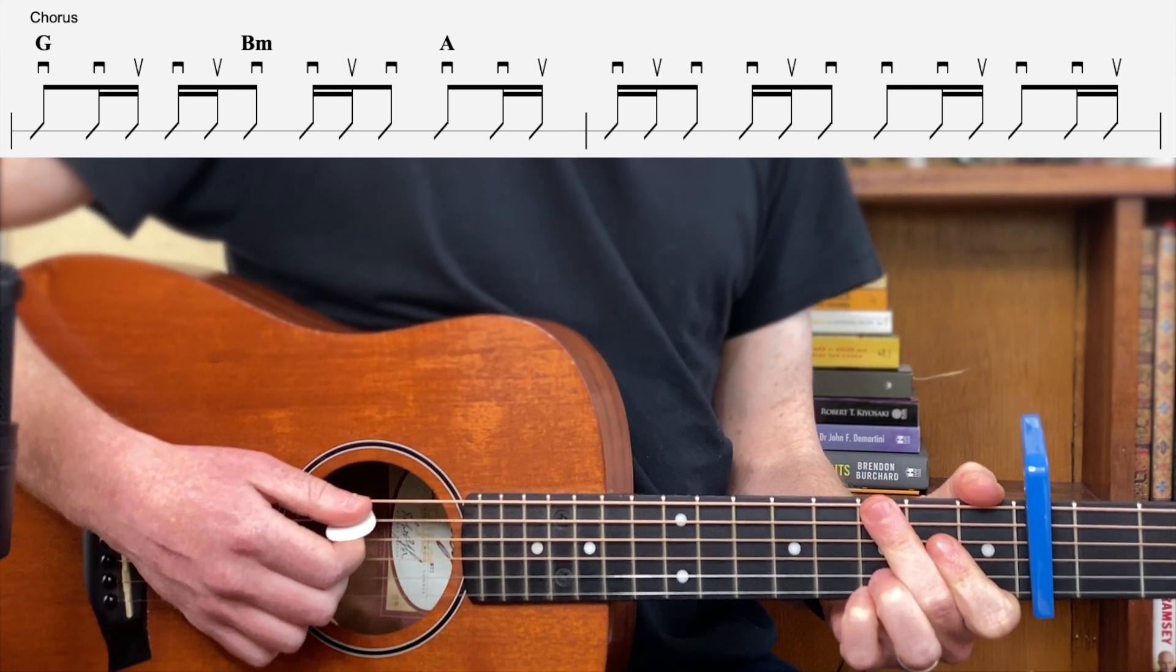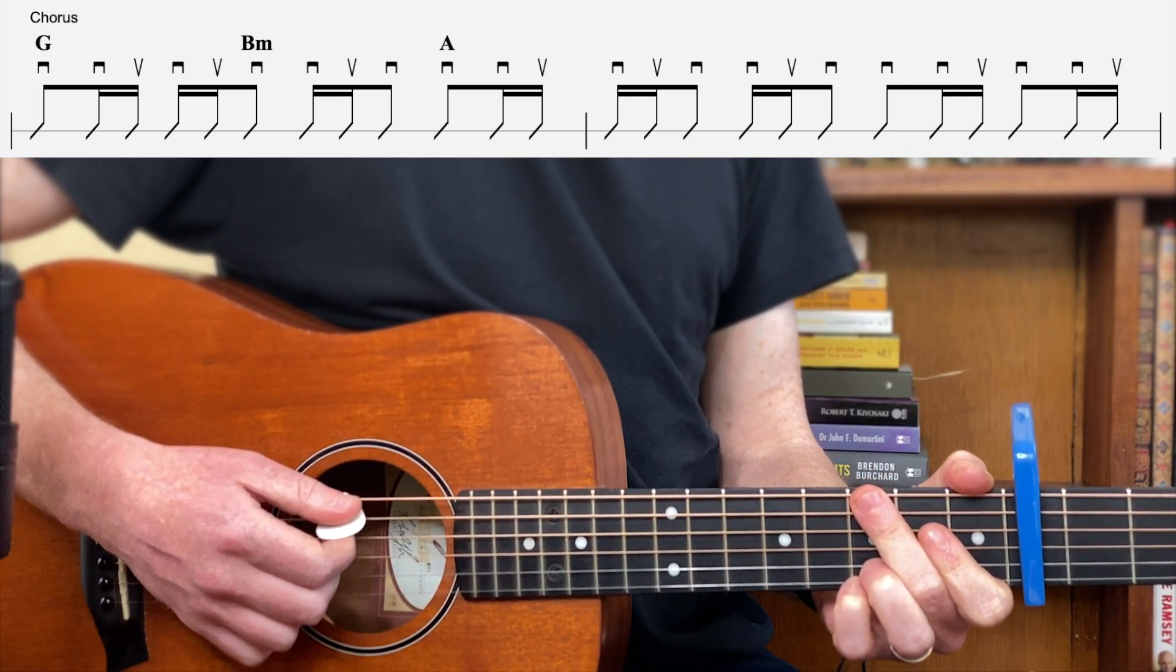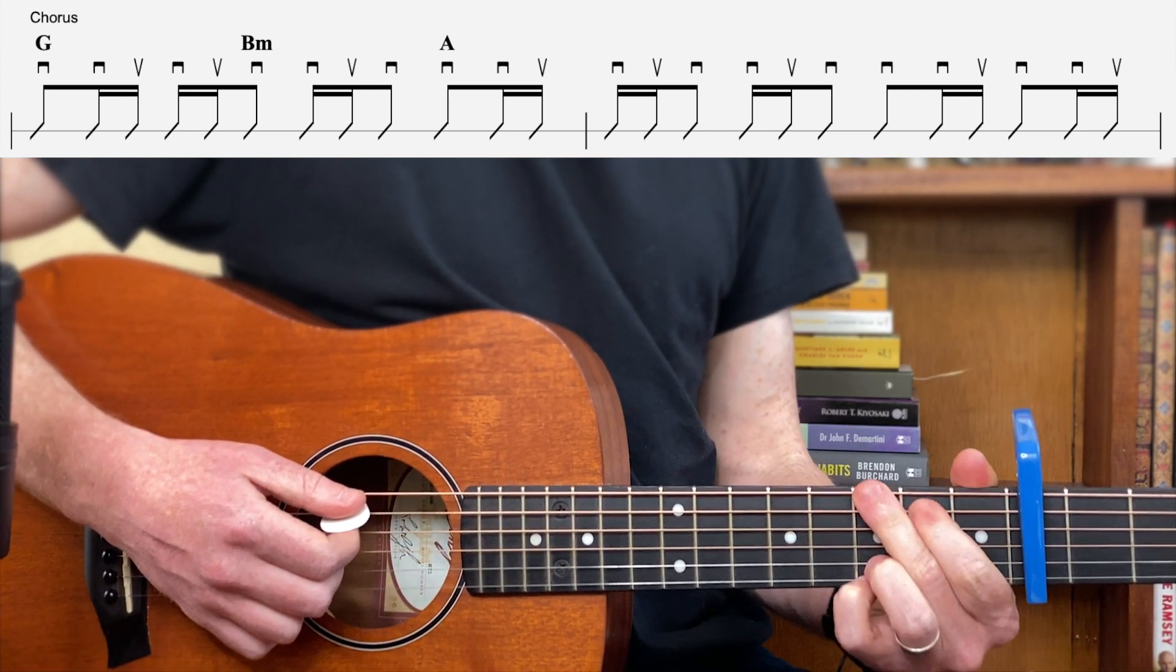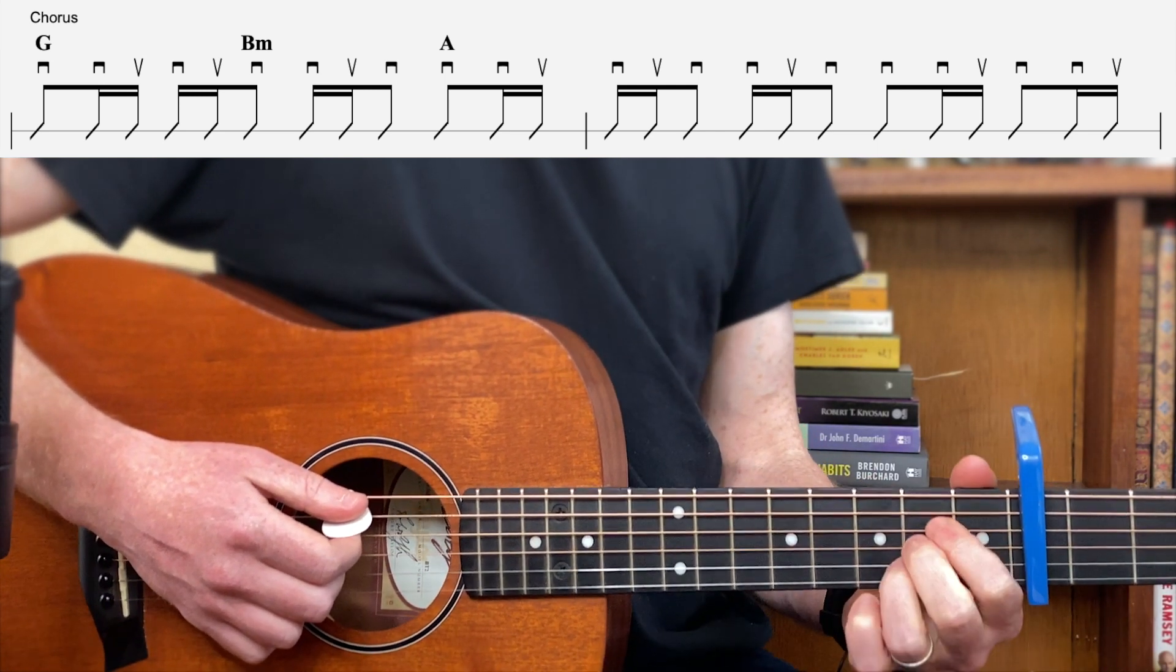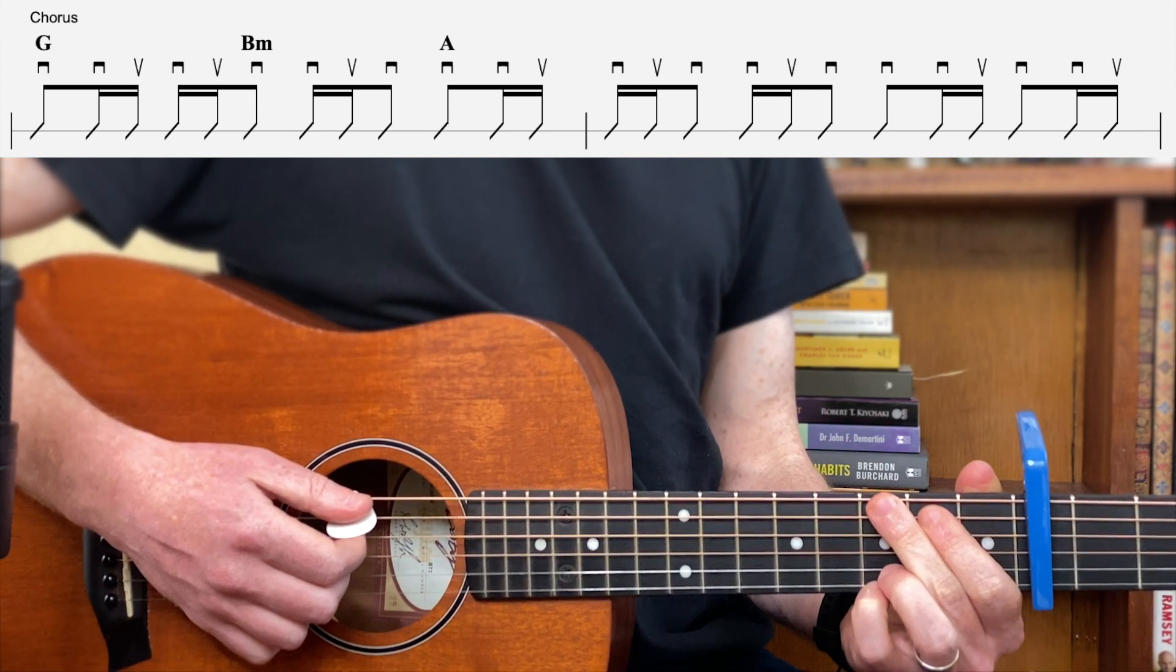Now after that chorus what happens next is you go back and you play another verse, then there's another pre-chorus which we've already covered, it's the same chords, and then you're back into the chorus. So it's all done.